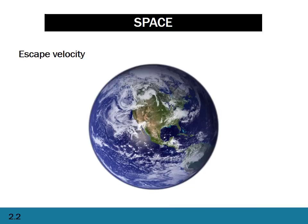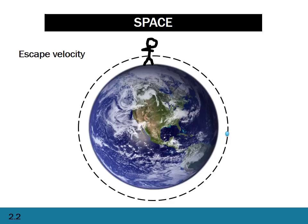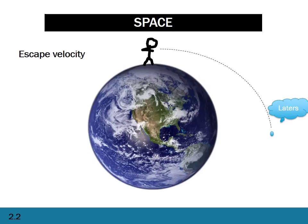Let's move on to escape velocity. We put a person on top of the earth with a ball. He throws it harder and harder until eventually the ball doesn't land back on earth — it keeps spiralling around. This is called orbital velocity. If you throw the ball even harder, eventually it flies away from earth entirely. That's called escape velocity. It's important that you know the formulas for these, that you can derive them and use them.